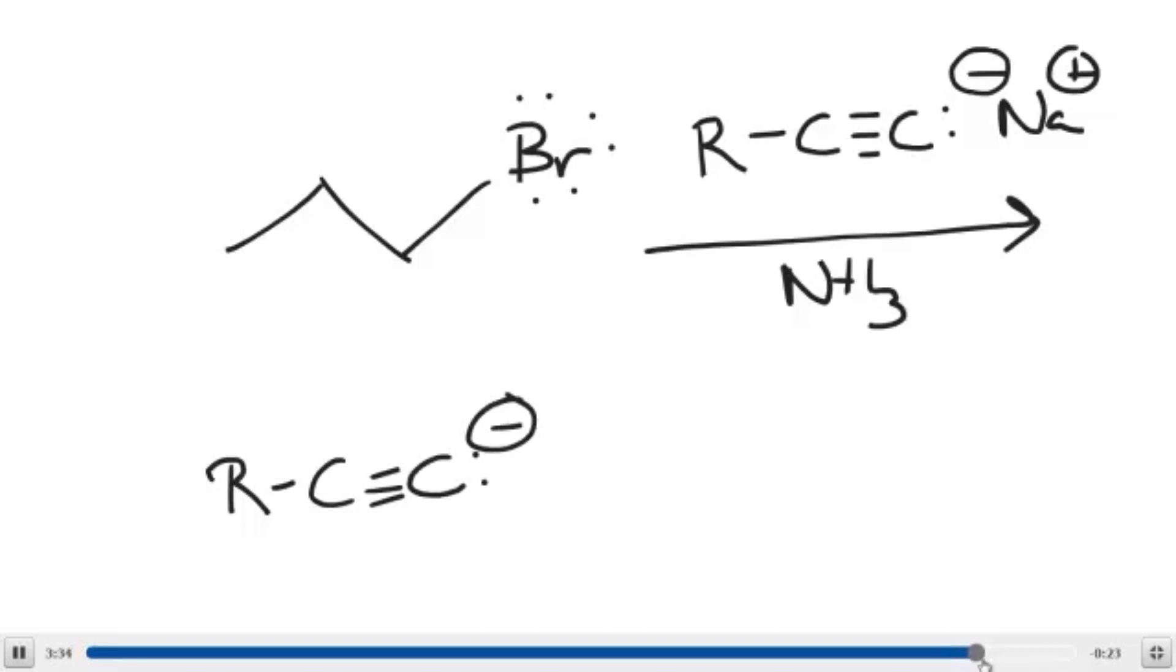And it will come in from the back side, add to the carbon, and the bromide will depart. This will result in the formation of this carbon-carbon bond. And then you just have NaBr left over as spectator ions in the solution.